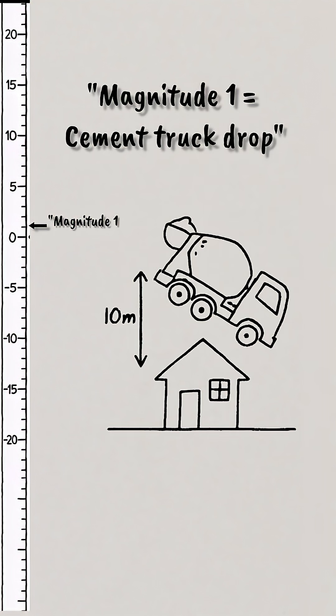A magnitude one quake releases the same energy as dropping a partially loaded cement truck from 10 meters onto the street in front of your house.